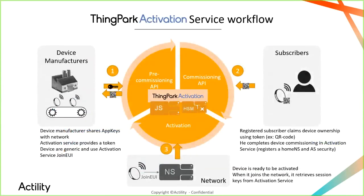Now let's dive into how the activation service works. There are three big steps. First, the device manufacturer will pre-commission in the service, meaning it imports their AppKeys into the service. In turn, the service provides an ownership token that the device manufacturer passes in an out-of-band process to subscribers so they can claim the device. This is a one-off ownership token, so the same device cannot be claimed twice.